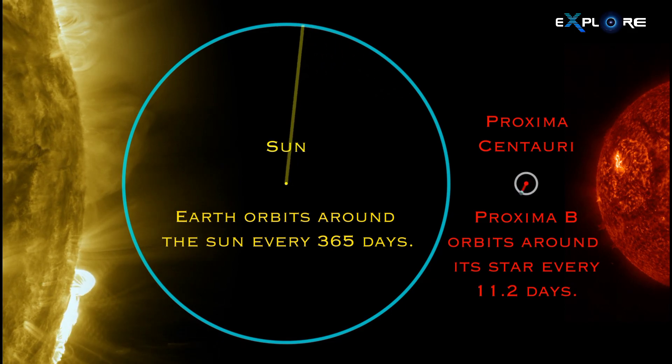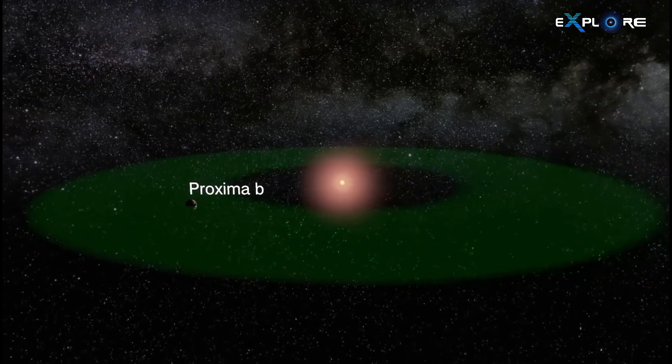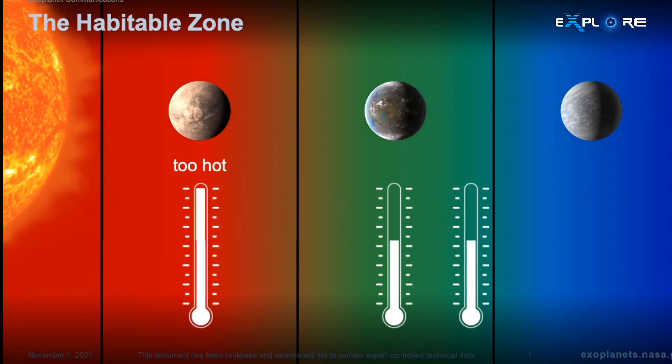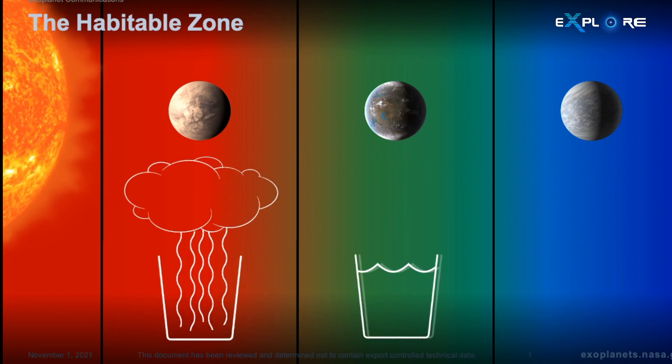Proxima B finds itself in a region referred to as the habitable zone. In this zone, conditions might be just right for the existence of liquid water, a critical ingredient for life as we understand it.